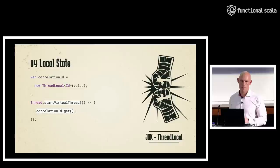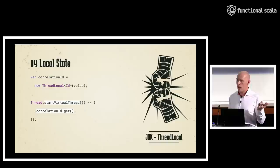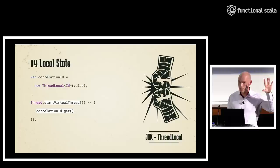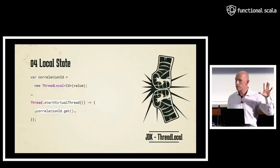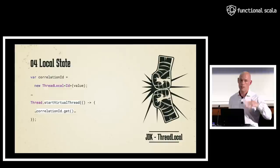Thread locals are a great way to propagate information across linear sequences of instructions — your logging libraries already use them. Unfortunately there's a problem made all the worse by Loom: Loom makes it so easy to start up new virtual threads. And every time you spin up a new virtual thread, it will have its own copy of the thread local initialized to its default value, not the one set in the spawning thread. So if a parent thread spawns 10 child threads, all 10 get the default (zero) values for their thread locals.